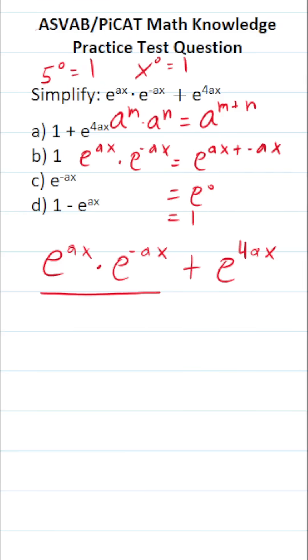In other words, we can replace what I underlined with one. This becomes one plus e to the four ax. We can't simplify this any further, so the correct answer to this one is going to be a.